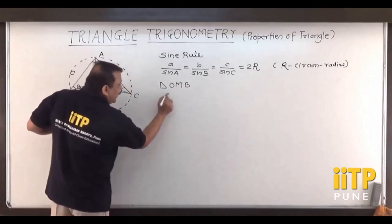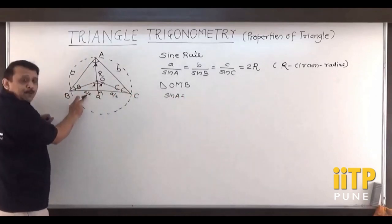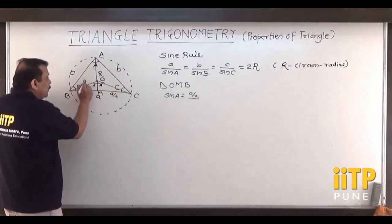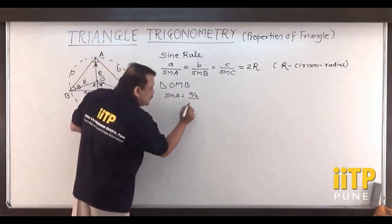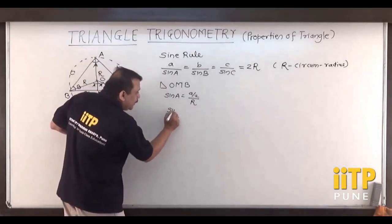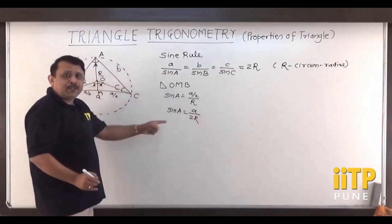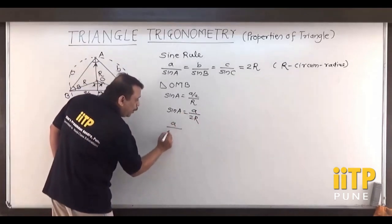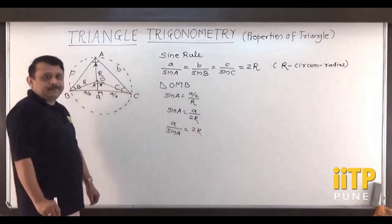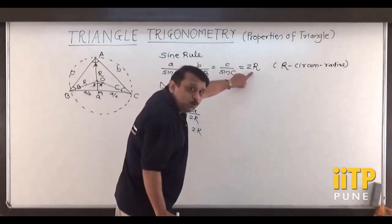If I find sin A in triangle BMO, I get sin A equal to the opposite side a/2 divided by OB, which is the radius R of the circle. So sin A = a/(2R), and by cross multiplication, a/sin A = 2R.